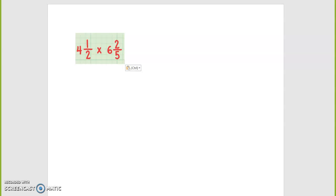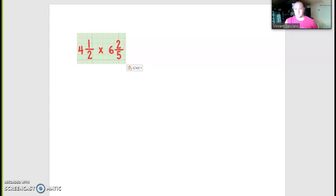Okay, this problem is four and a half times six and two fifths. Now the first thing we're going to do, we are going to take this and convert them both into improper fractions.